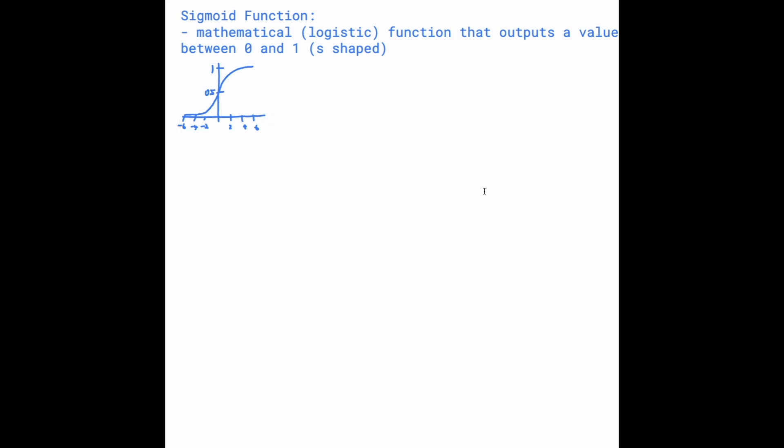So the sigmoid function is defined as f(x) = 1 / (1 + e^(-x)). So we have f(x) equals the output, which is going to be from 0 to 1. And then we have x, which is the input. And then e, that's a constant, which is roughly equal to 2.718.